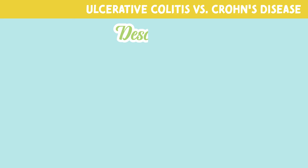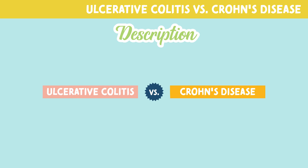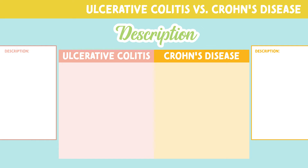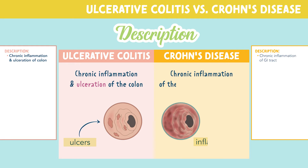Now let's look at the core differences between ulcerative colitis and Crohn's disease. Ulcerative colitis is described as a chronic inflammation and ulceration of the colon, while Crohn's disease is described as chronic inflammation of the gastrointestinal tract.